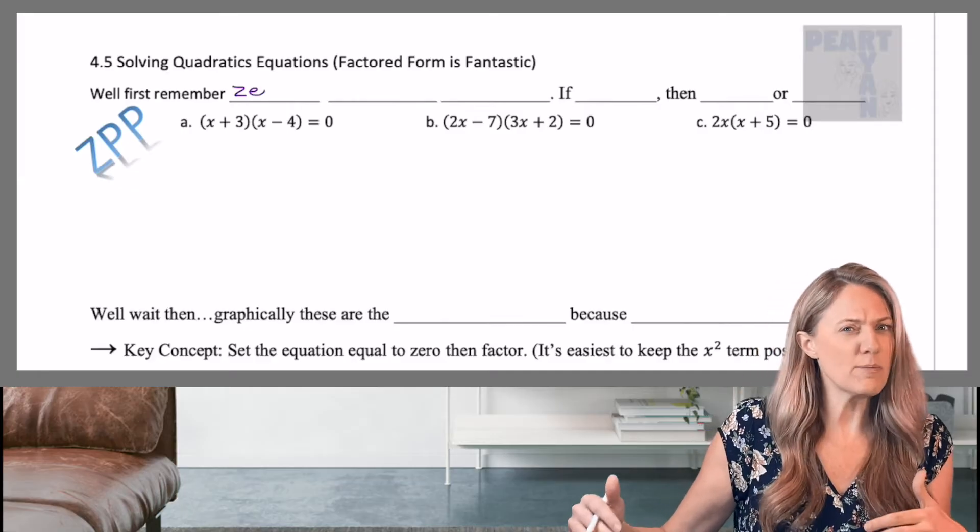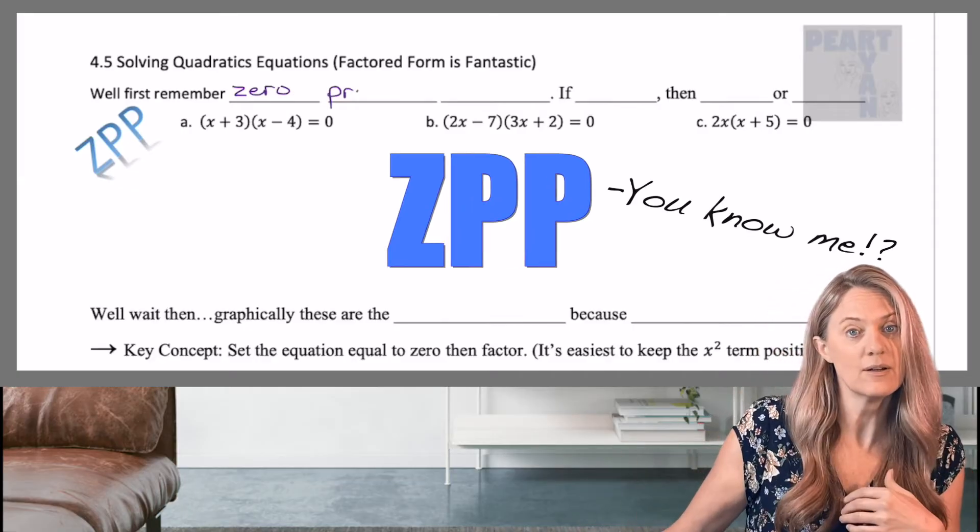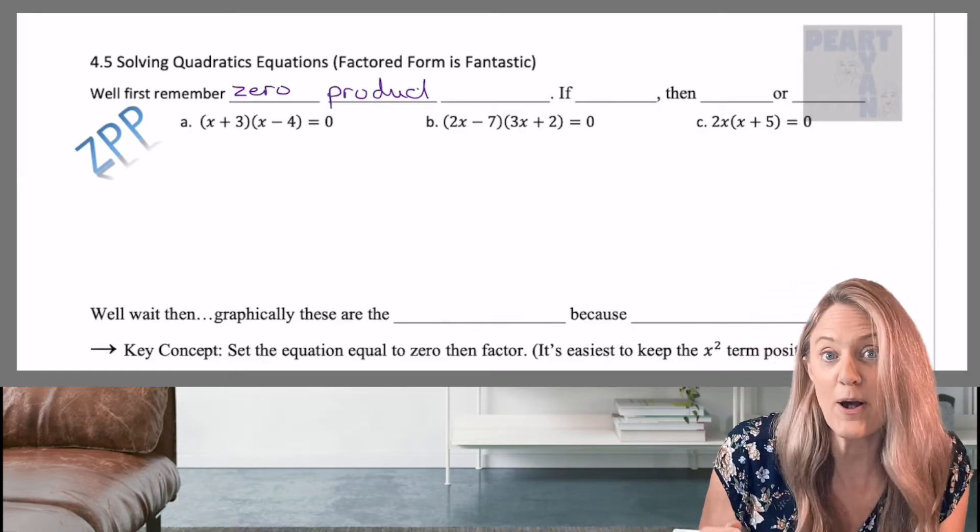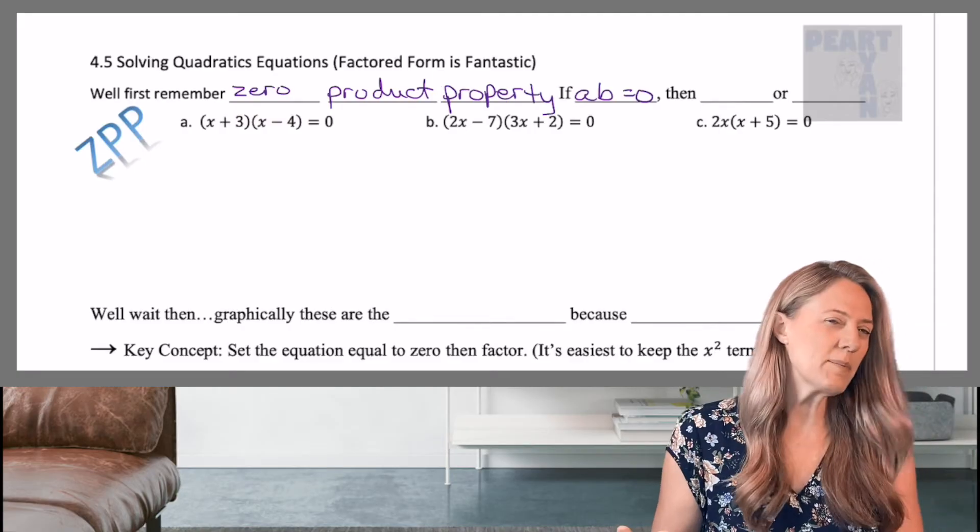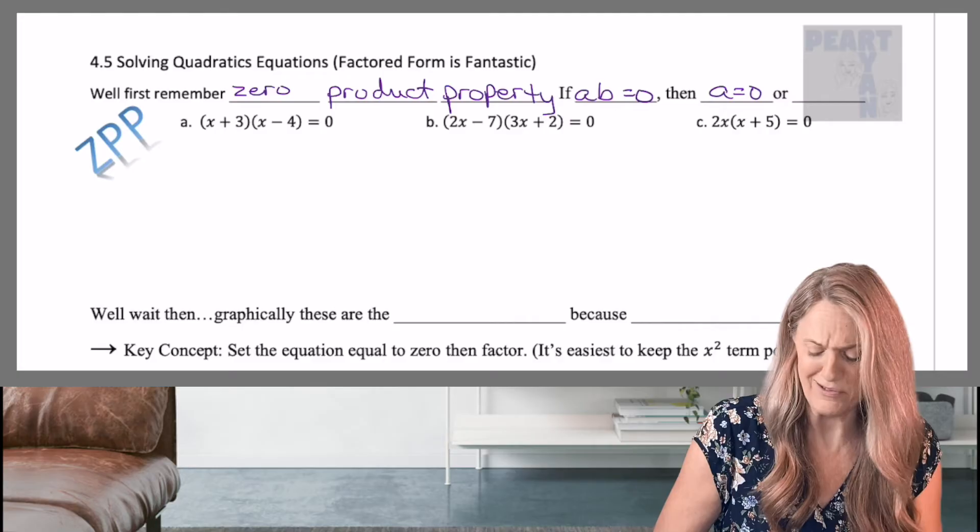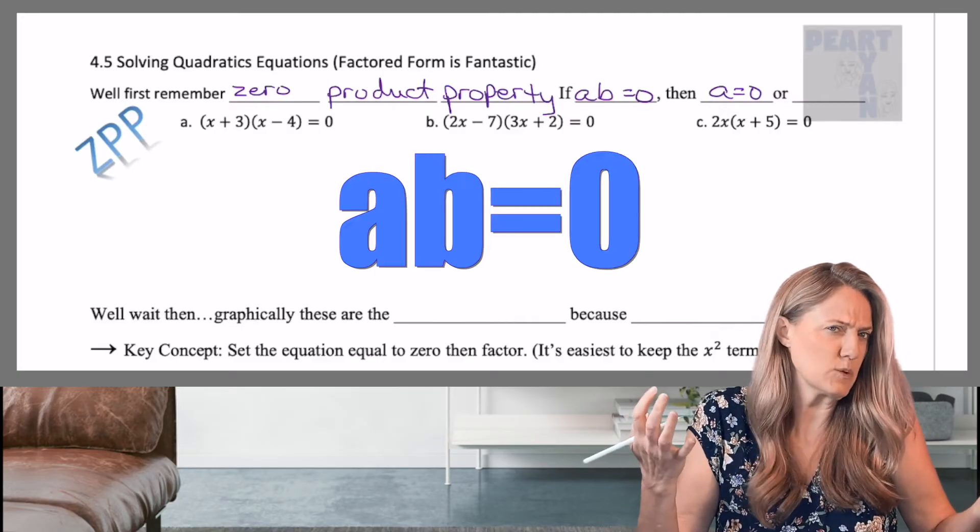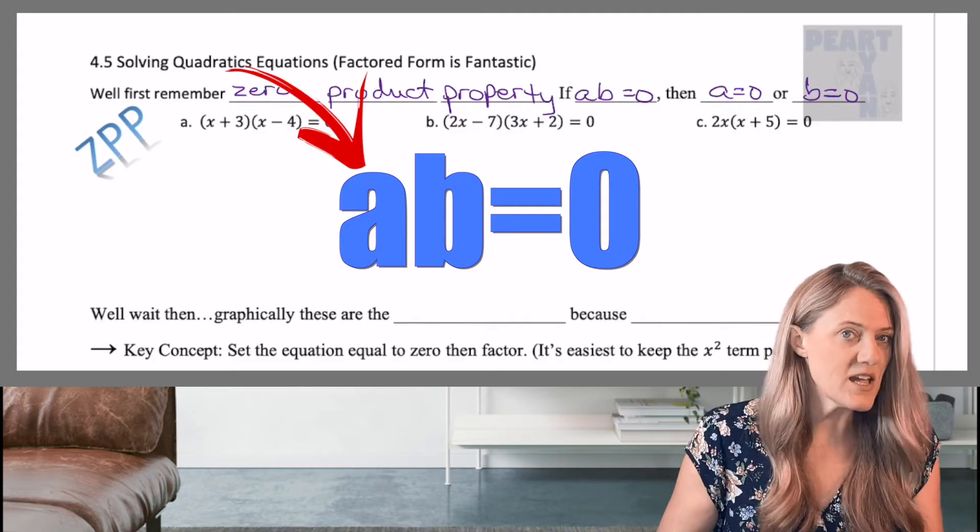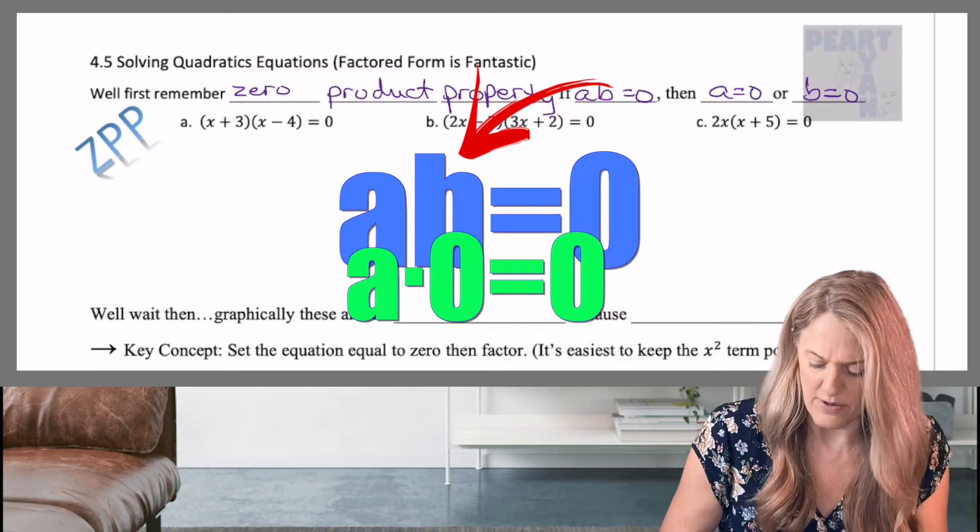First of all, hey, do you remember ZPP? You know me? Yeah, zero product property. So remember, zero product property says that if you're multiplying two things together, so say A times B equals zero, then we know A equals zero or B equals zero.